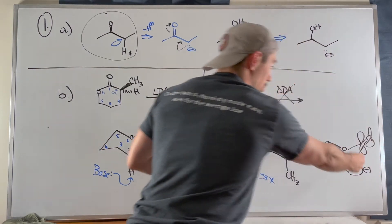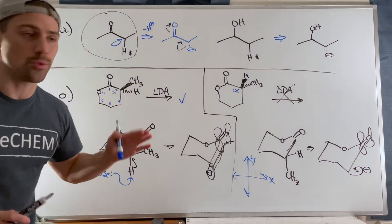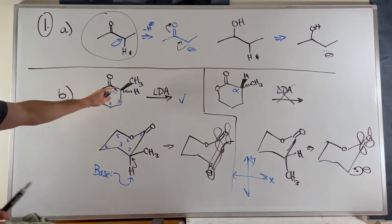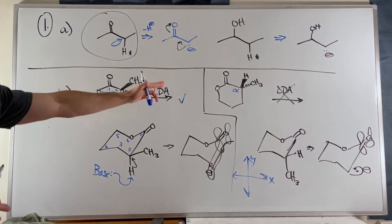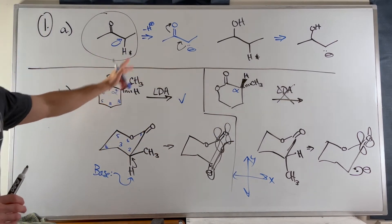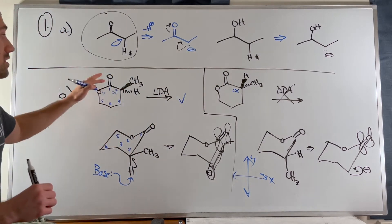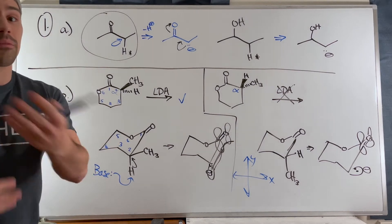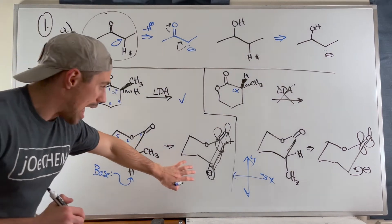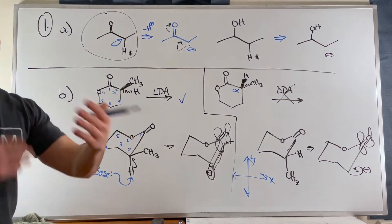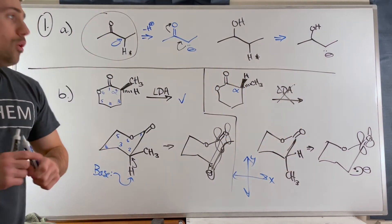The p orbitals we're talking about are on the y-axis, so they are perpendicular to each other, and that does not work for alpha deprotonation — we need a parallel situation. That's why it works in the first case and not the second. The positioning of the methyl group dictates where the hydrogen is: axial leads to parallelism and works; equatorial leads to perpendicularity and doesn't work.